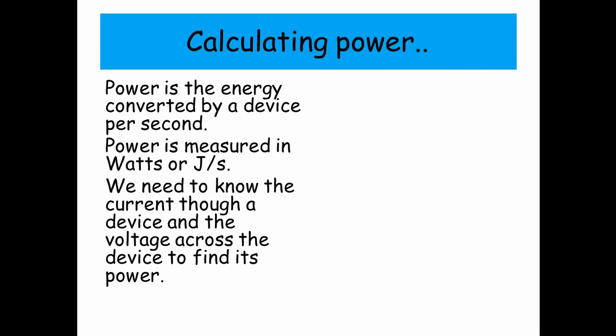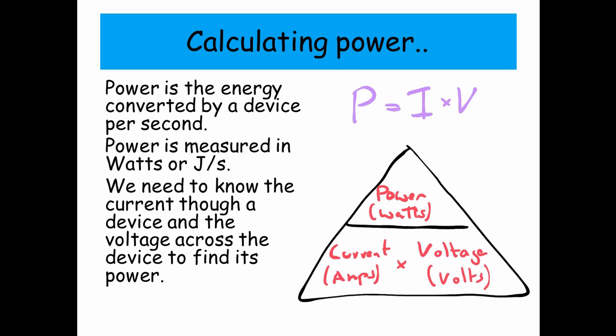We need to know the current through a device and the voltage across the device to find its power. And we use this formula here, power equals the current times the voltage. Here's the triangle, so we've got power in watts at the very top, and current in amps times voltage in volts at the bottom.